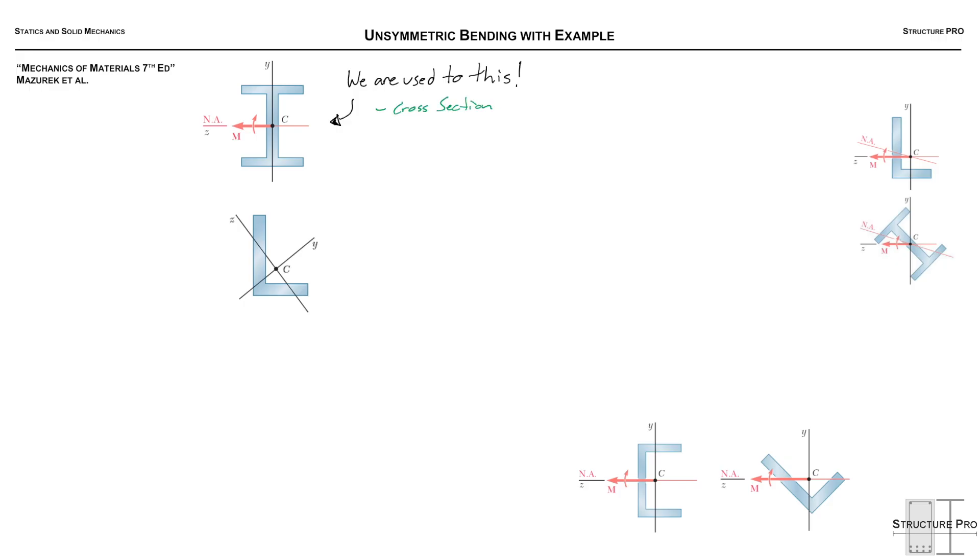So this is what we're used to. We're used to symmetrical cross-sections, at least symmetrical in one way, and bending on planes of symmetry. And it's very simple and easy and we like it and the neutral axis is right in the middle and it's good. But sometimes there is no axis of symmetry.